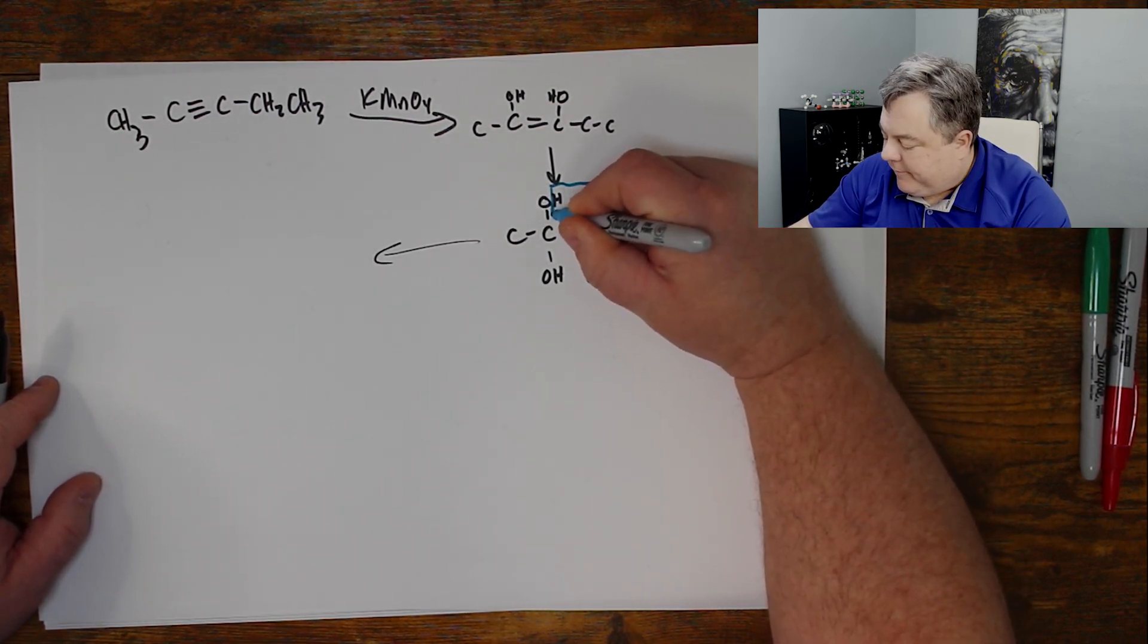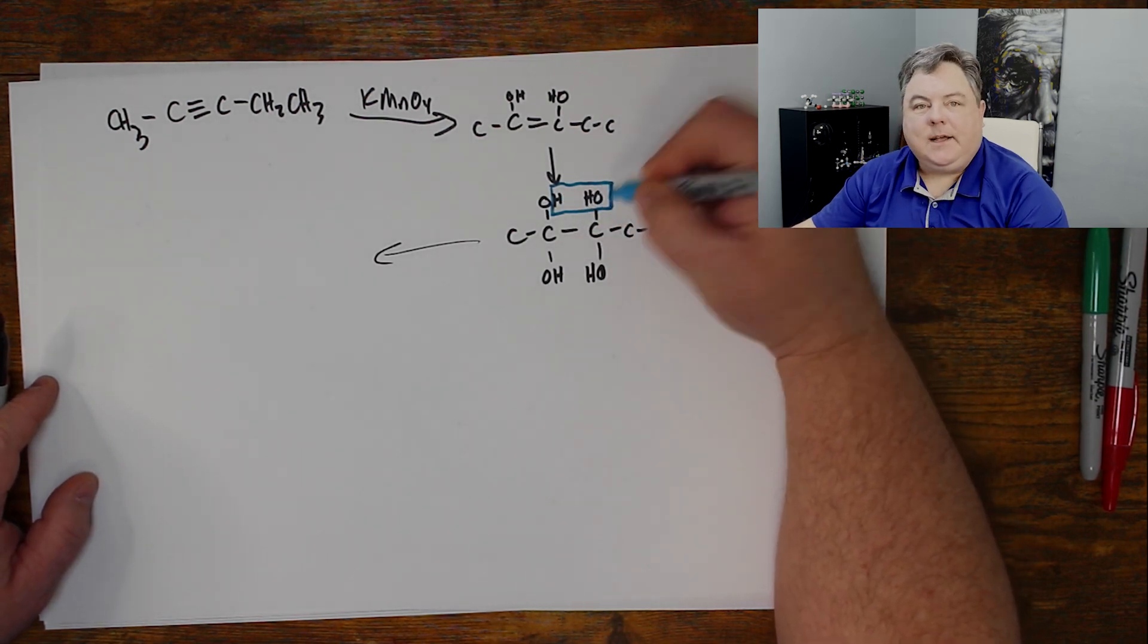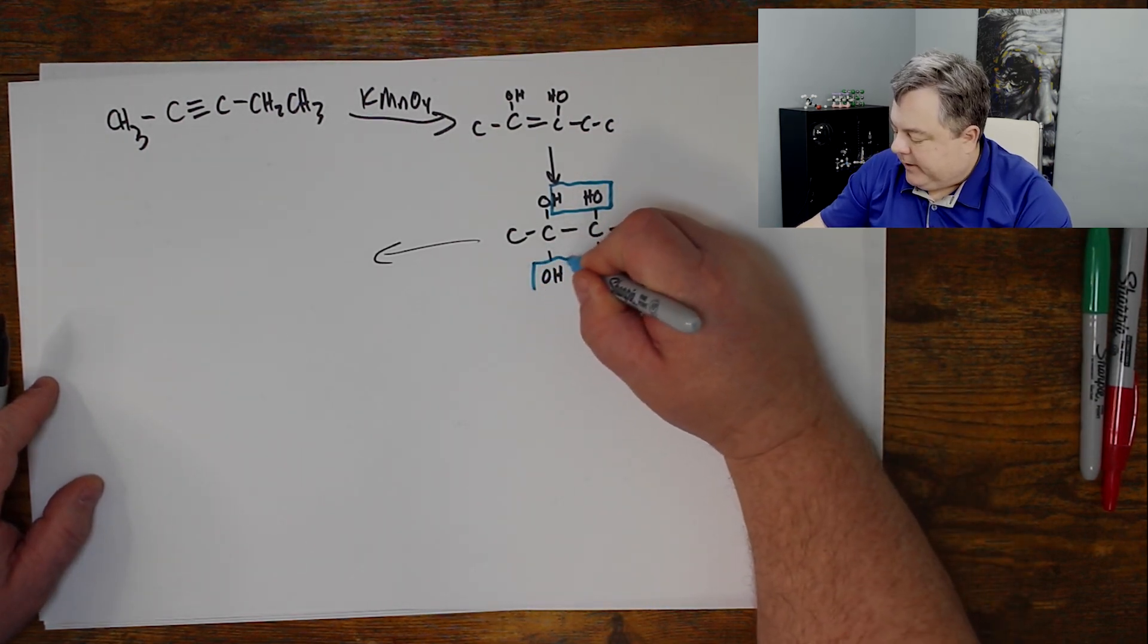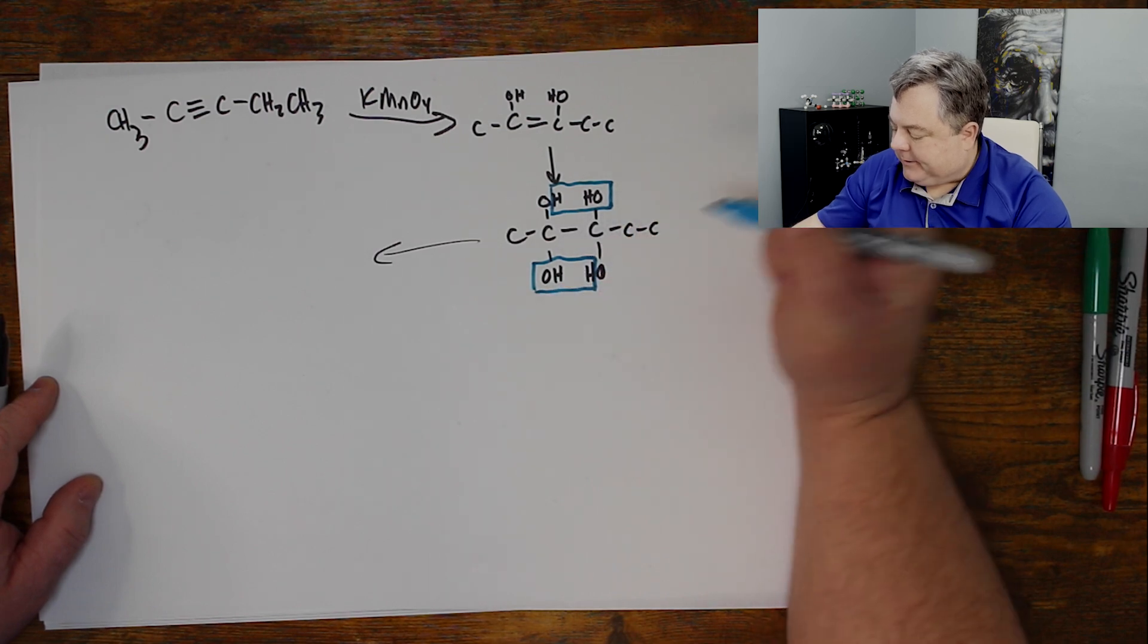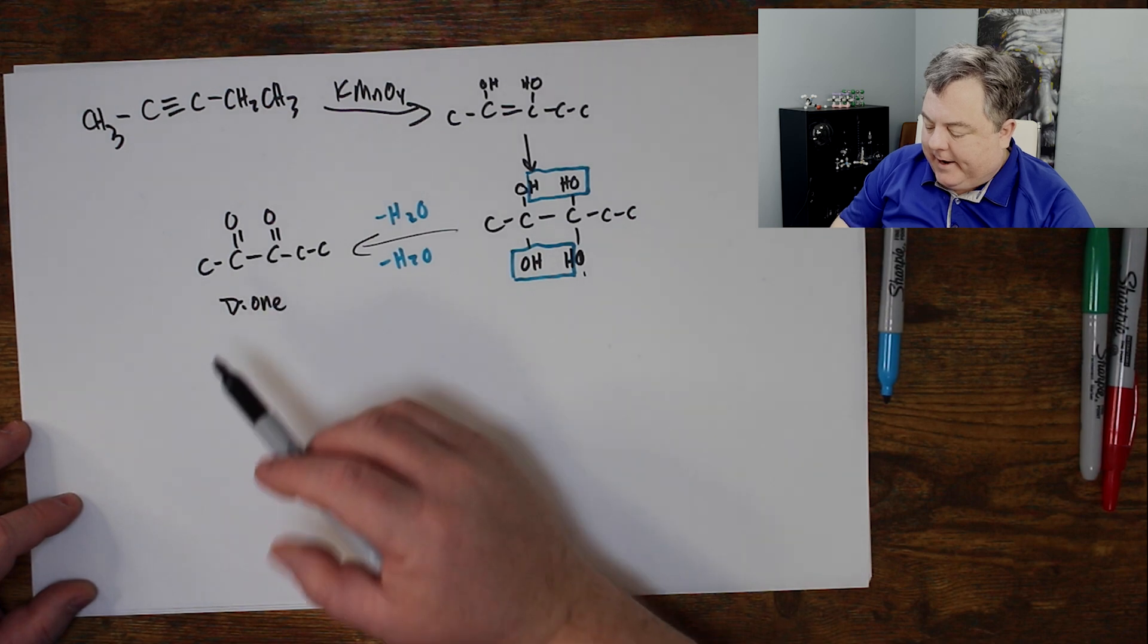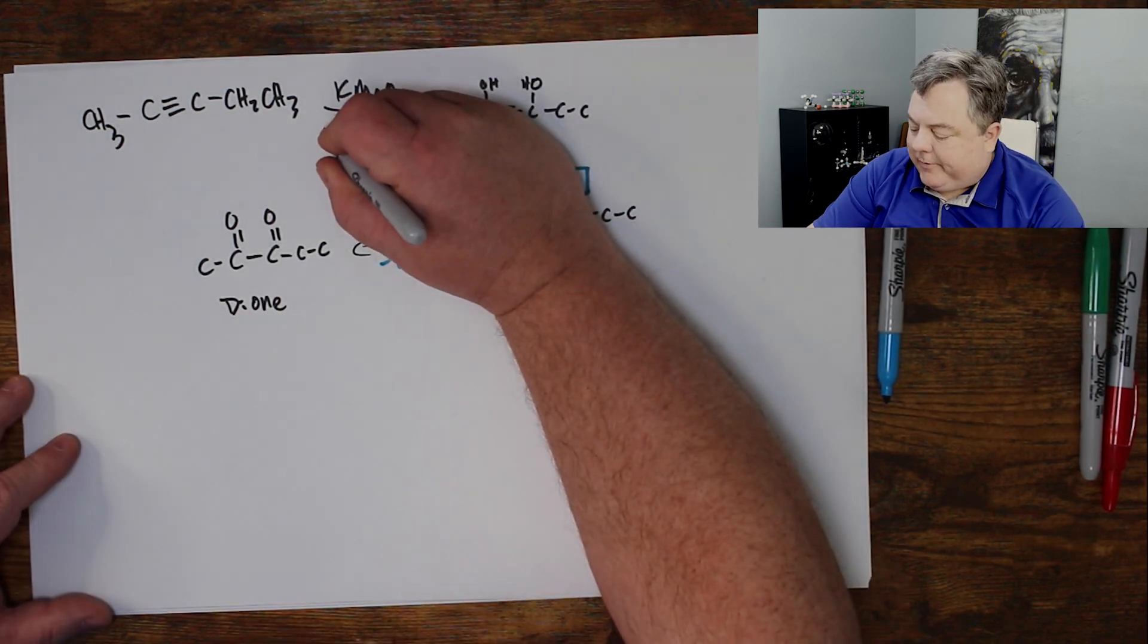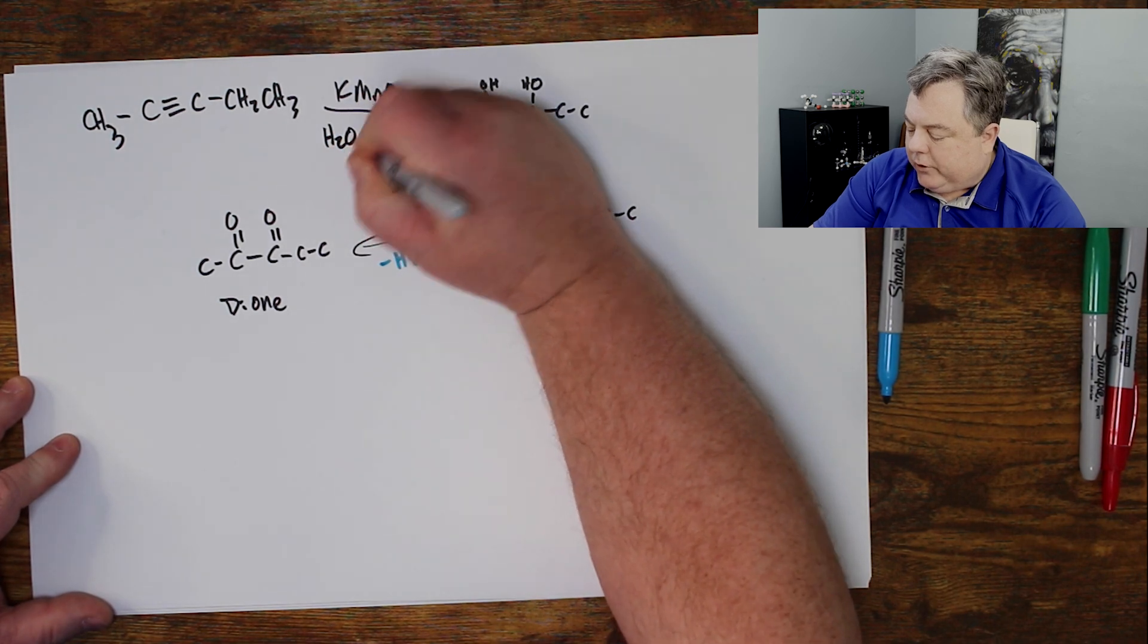Whenever you see this, I want you to recognize, there's a water right there. There's two hydrogens and an oxygen next to each other. And here's another water, two hydrogens and an oxygen. Once these waters fall off, I make a dione, two ketones on that compound. That's what happens if it's cold, dilute, and neutral.